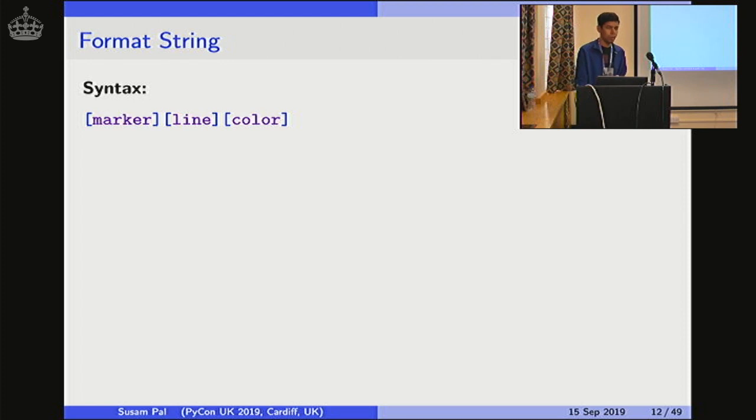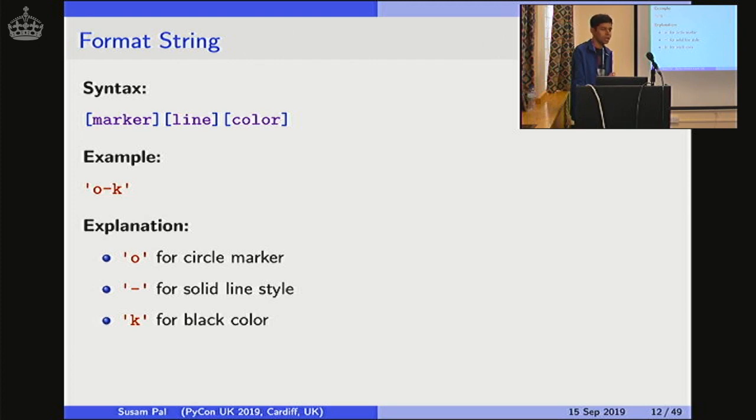Let me spend a little time with the format string. So we saw this format string here, O hyphen. The syntax is composed of three parts: the marker shape, the line style, and the color. Let's take an example. There is O hyphen K. That's an example where O stands for the circle marker, hyphen for solid line, K for black color. And there are many other color abbreviations supported. For example, R for red, G for green, and so on. And colors itself is a huge topic, which I will not be covering in this particular presentation.